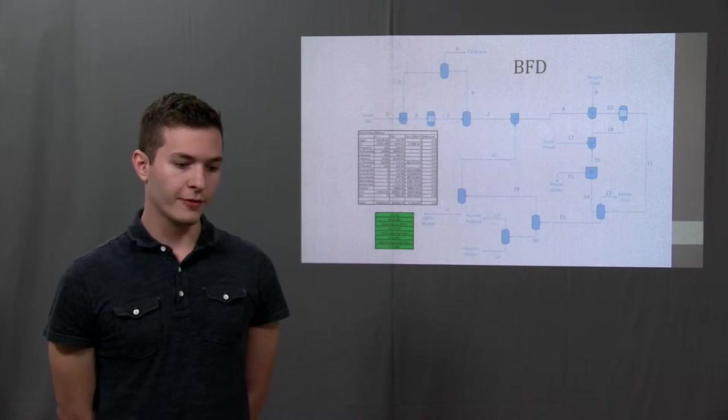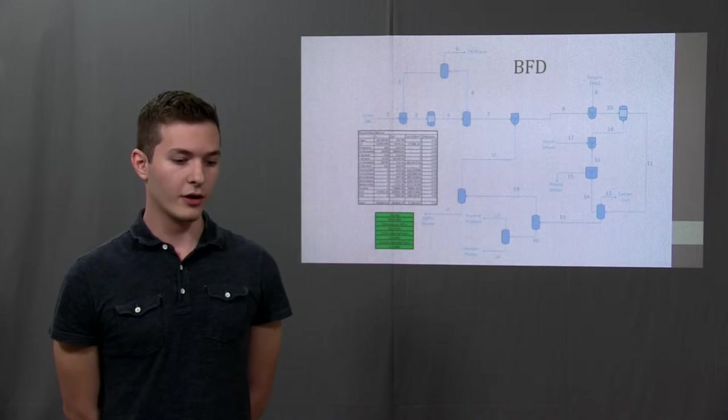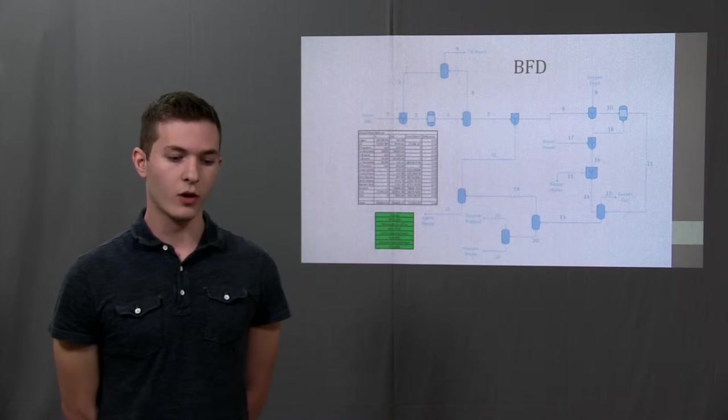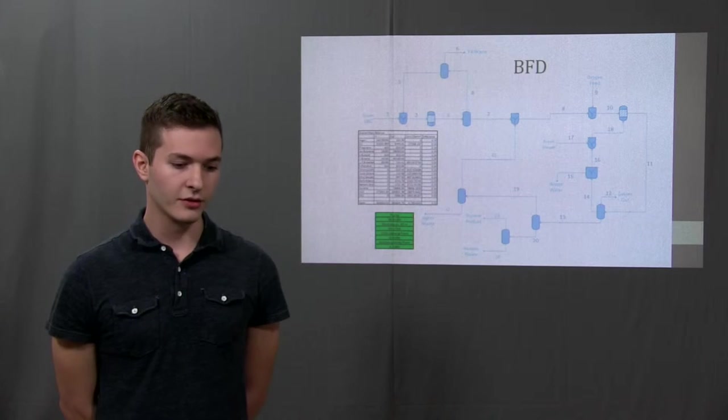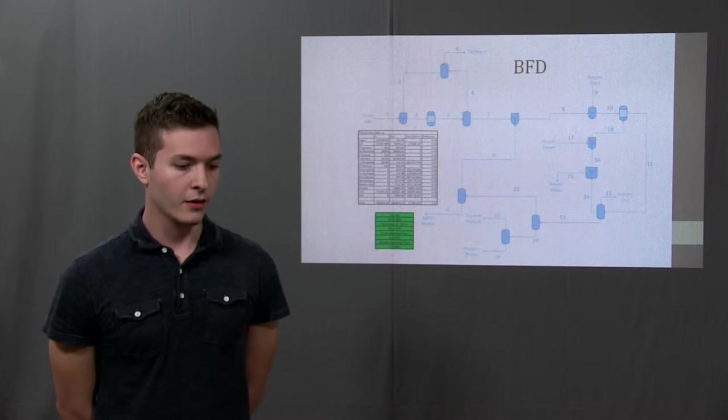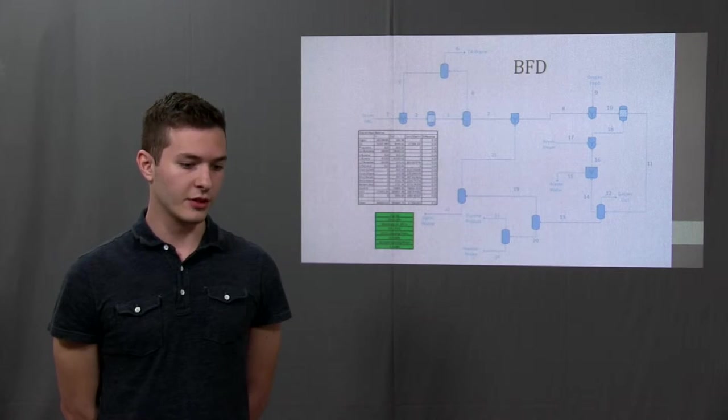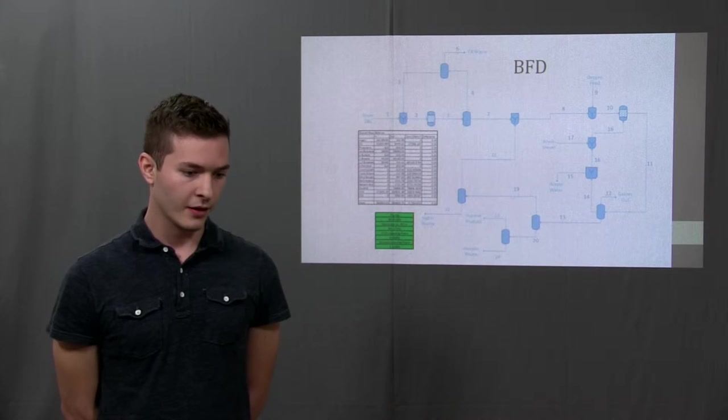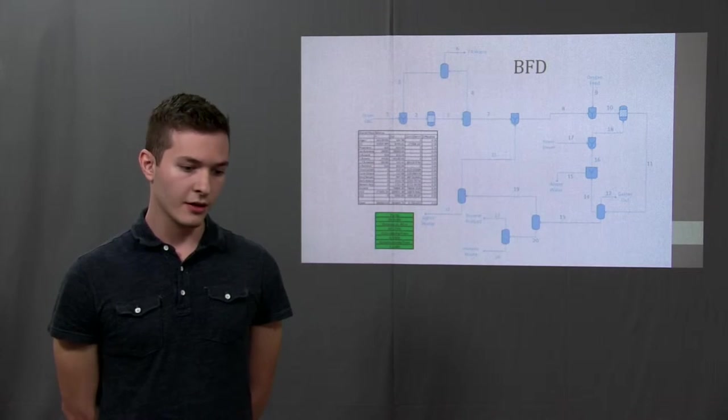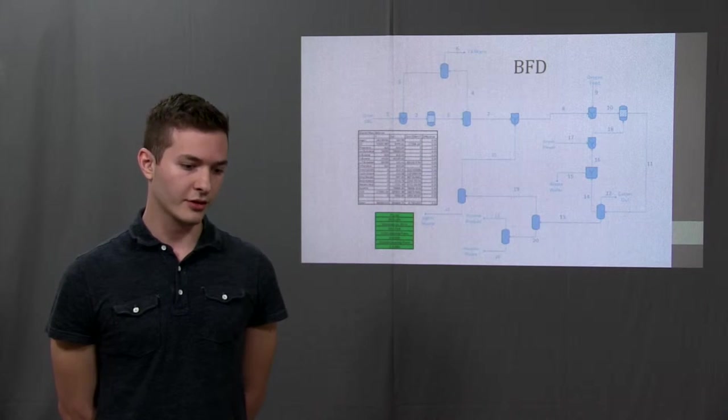The effluent goes to a three-phase separator where it then splits into water, gases, and organics. The gases which contain oxygen, CO2, and other traces are then sent to a flare. The water is mixed with fresh steam stream and sent back into the oxy-dehydrate reactor. The organic stream containing all the other elements is sent into our separation process.